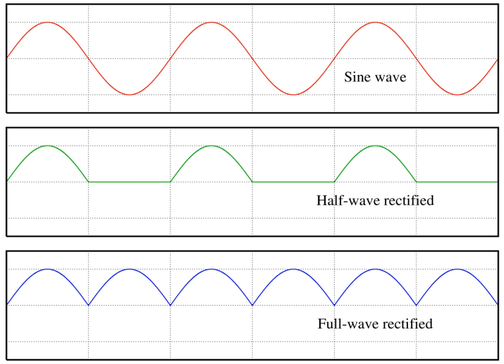Waves are described by a wave equation which sets out how the disturbance proceeds over time. The mathematical form of this equation varies depending on the type of wave. Further, the behavior of particles in quantum mechanics are described by waves. In addition, gravitational waves also travel through space, which are a result of a vibration or movement in gravitational fields.